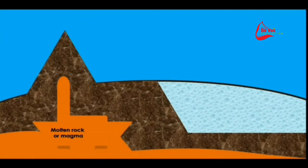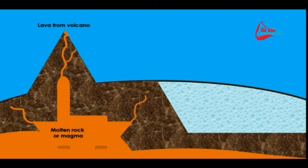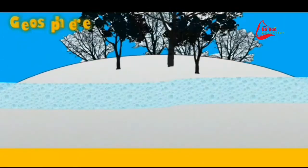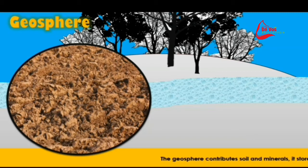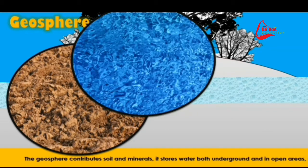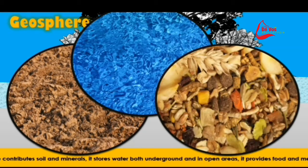For example, molten magma rock from under the surface first has to be spewed out as lava onto the surface, containing a rich variety of minerals. This lava then has to cool down and solidify as rocks. After it has rained on the rocks for a very long time, the minerals will start building up on the ocean floor. The geosphere contributes to soil and minerals, stores water both above ground and underground, and provides us with food, medication, and areas for human development.